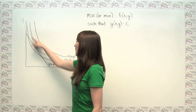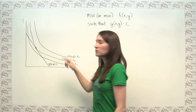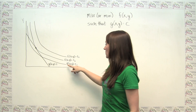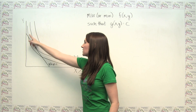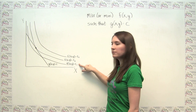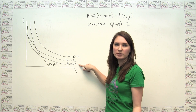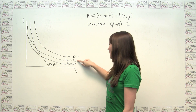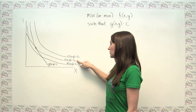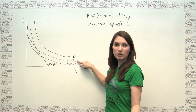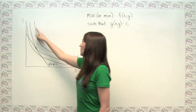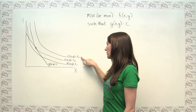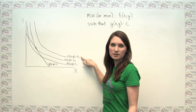The indifference curves are what mathematicians call the level sets of the function f(x, y). For example, the first indifference curve is where f(x, y) equals some arbitrary constant C₁, the second indifference curve is the set of points where f(x, y) equals a larger value C₂, and so on — the next indifference curve up is where f(x, y) equals some constant C₃.